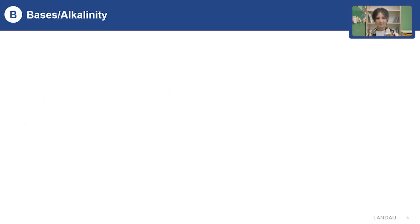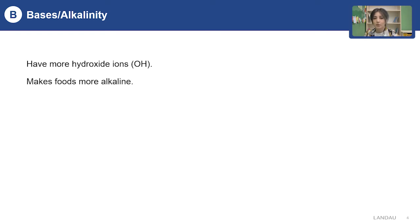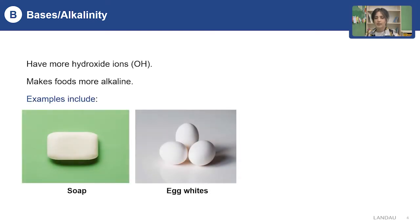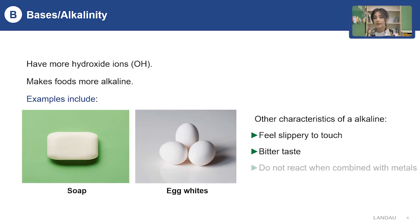What can we say about alkalinity? Alkalinity is a measurement of the dissolved alkaline substances in water, which tells us water's ability to neutralize acids. Opposite to acidity, they make our foods more alkaline and hold more hydroxide ions. Examples are toothpaste, soap, or egg whites. When you touch them, they feel slippery, they taste bitter, and opposite to acidity, when they combine with metals, they have no reaction.